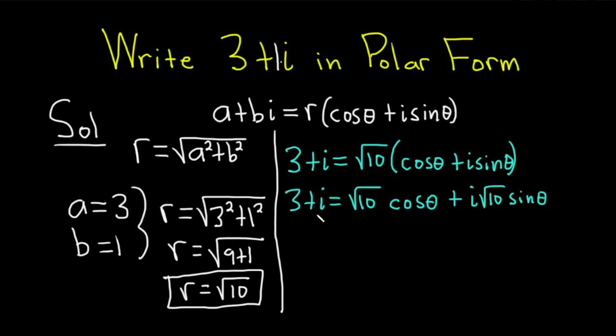And now two complex numbers are equal when their real and imaginary parts are equal. Basically that would mean that you take 3 and you set it equal to this. You get 3 equals square root of 10 cosine theta.